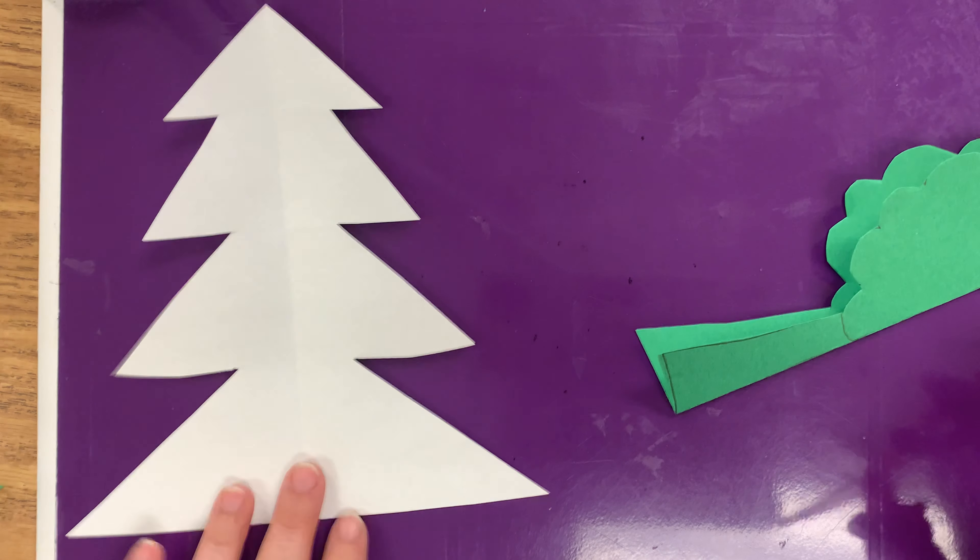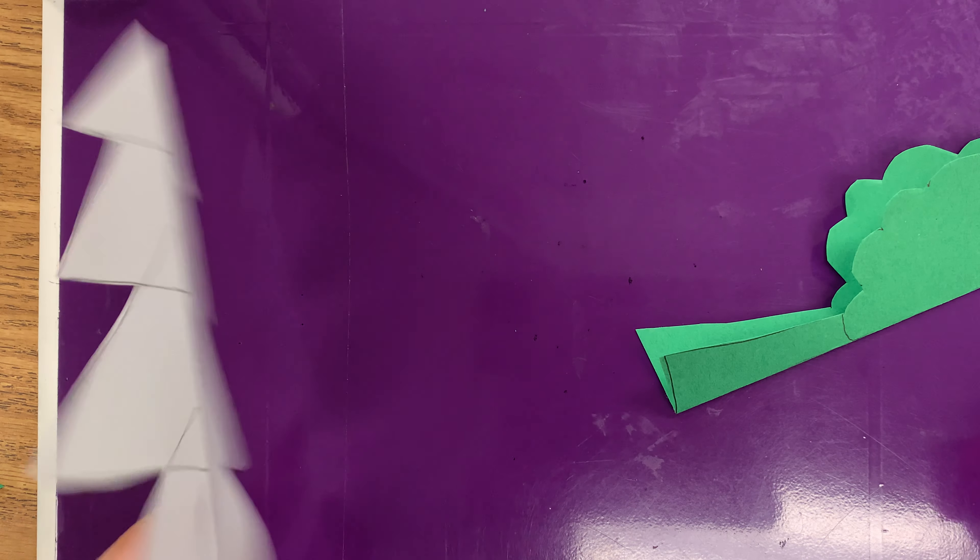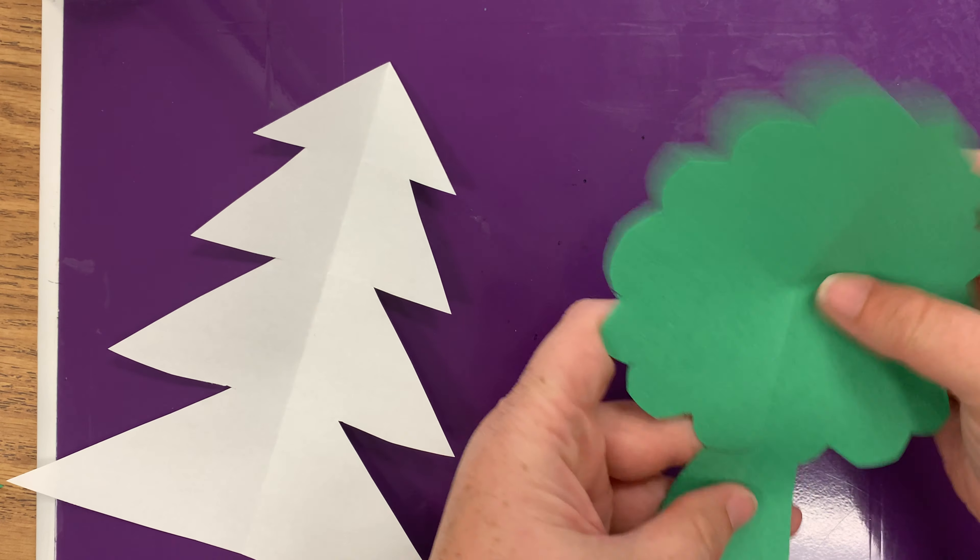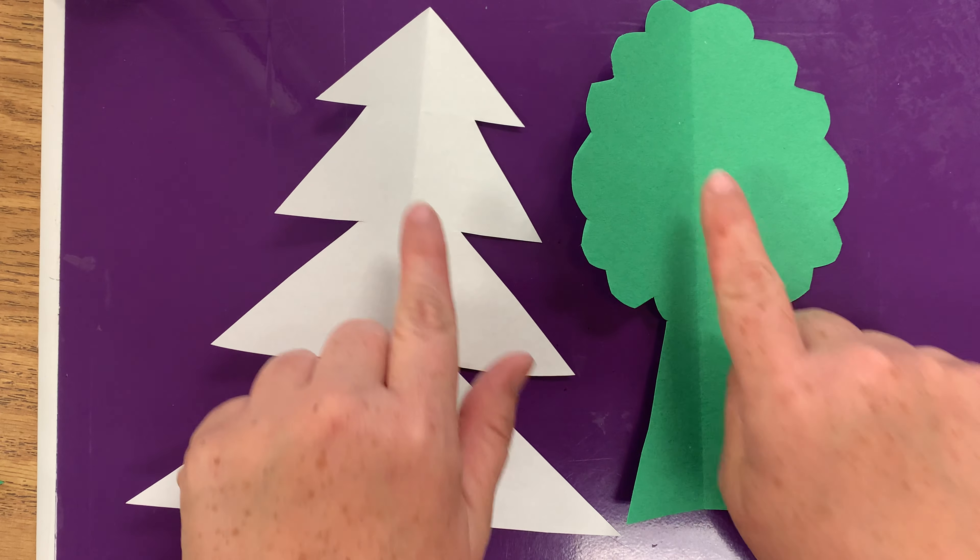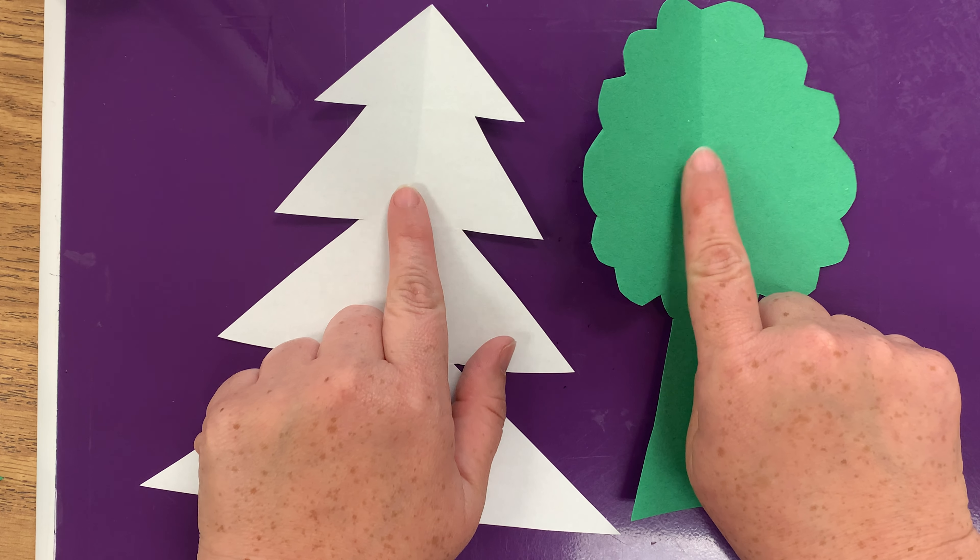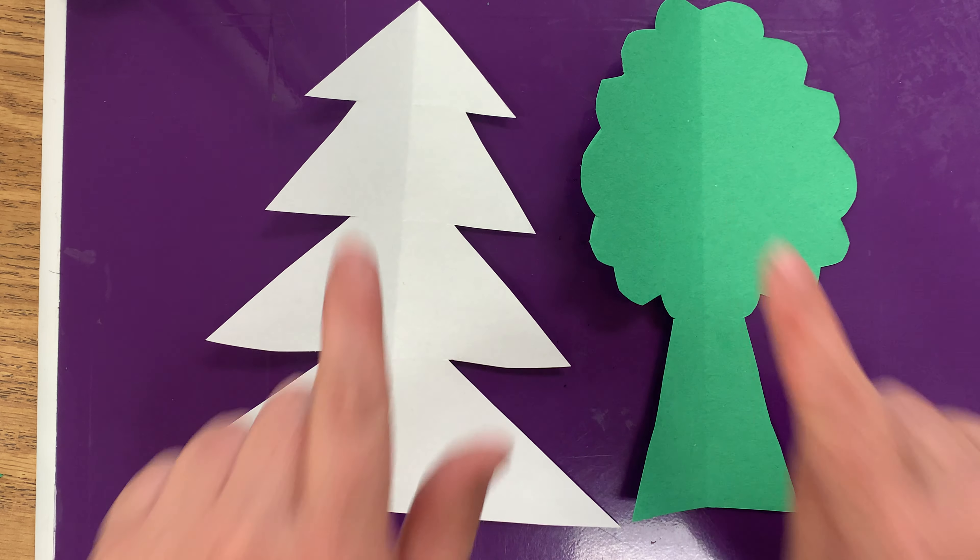So instead of putting this side up, you're gonna put that on the back. So I've got my two trees. So in the middle, you're gonna write your growth goal for this year.